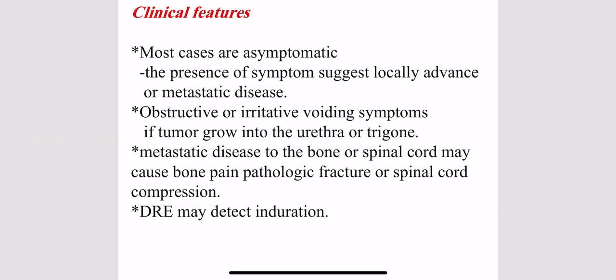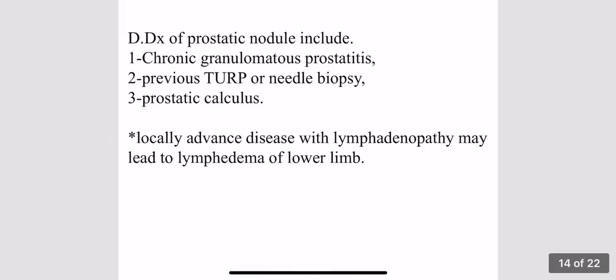If we wait for the patient to present with signs and symptoms, it means the tumor is already aggressive. Therefore, carcinoma of the prostate is usually diagnosed by surveillance. The tools of diagnosis are PSA and digital rectal exam, which should be done for every patient consulting a urologic clinic above 50 years of age, and from 40 years if there is a family history or in African Americans.